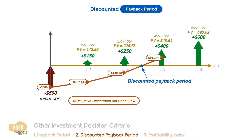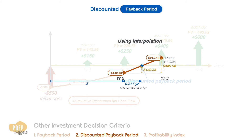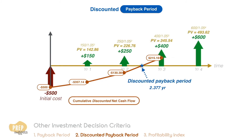And we're back. Linear interpolation is about ratios. What we need to find is the height of this smaller triangle, which is 130.38, against the height of this larger triangle, which is the higher point minus the lower point. The width of this smaller triangle is therefore the ratio of the two heights multiplied by one year, giving us 0.377 years. Plus 2, and we get a discounted payback period of 2.377 years.